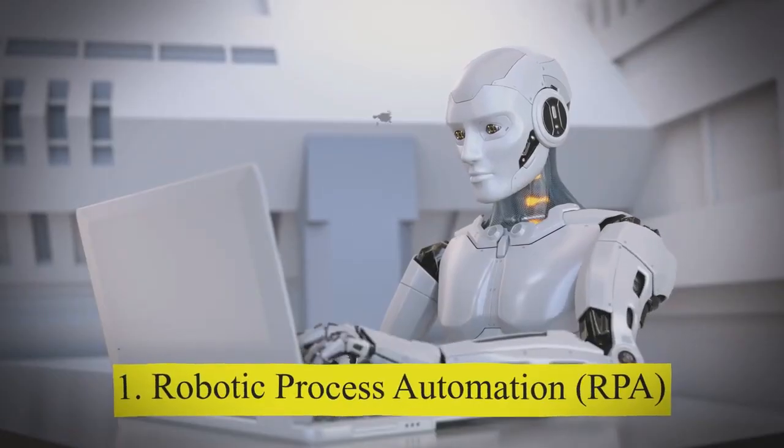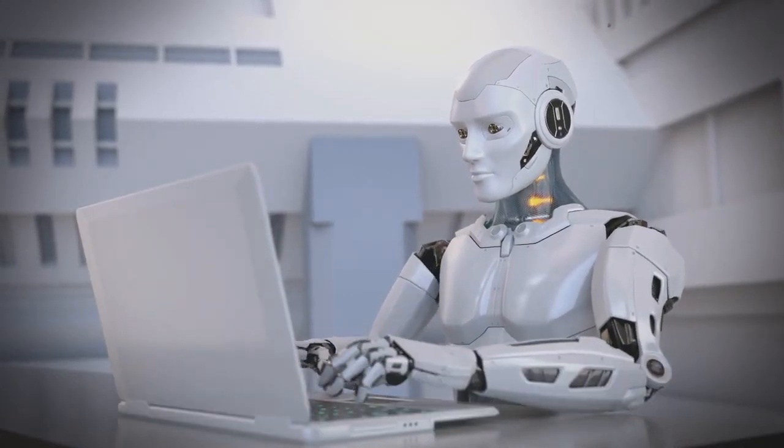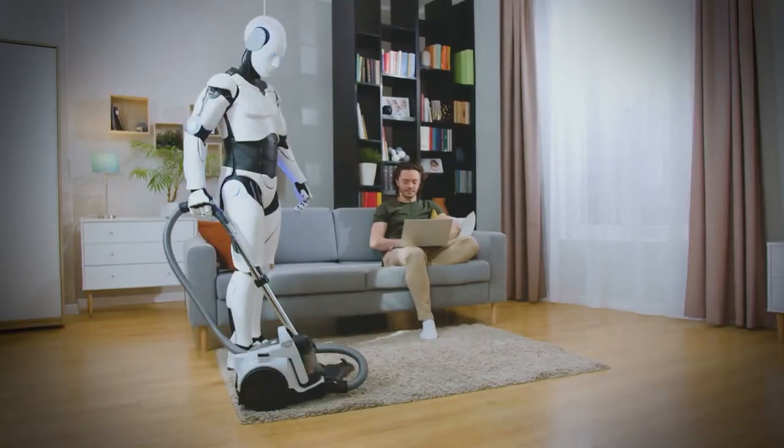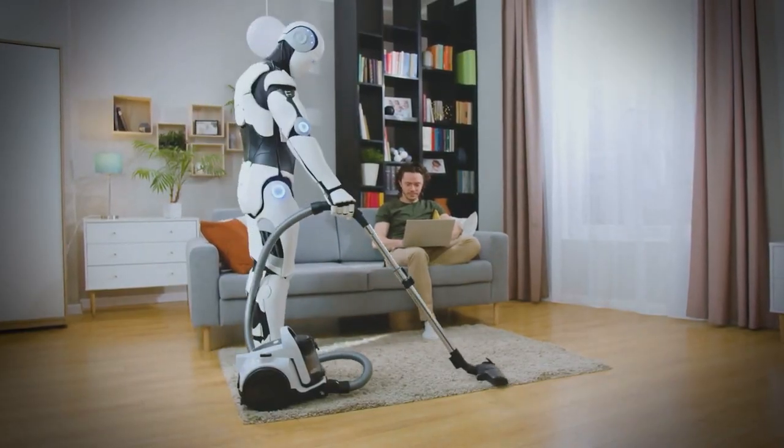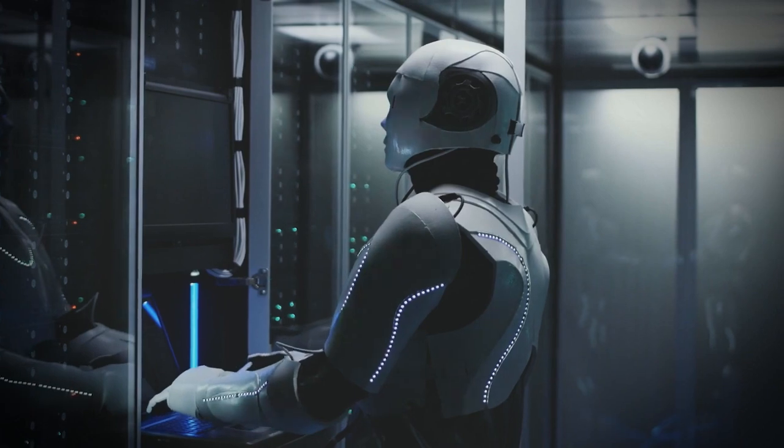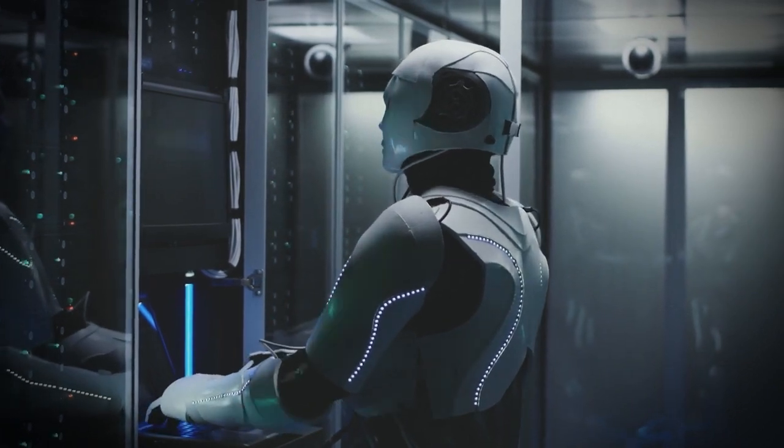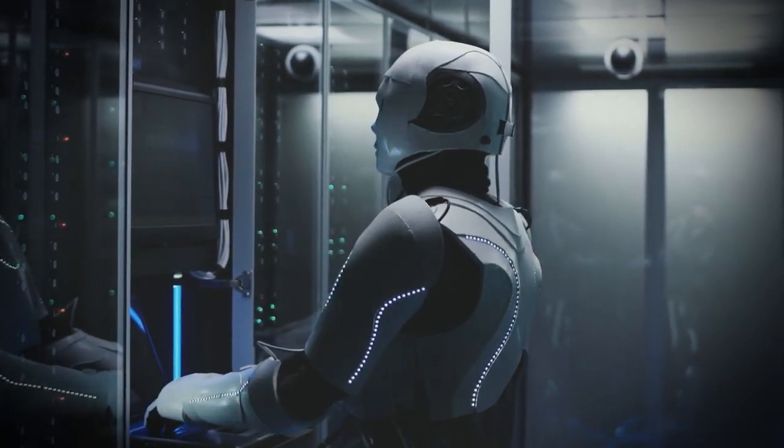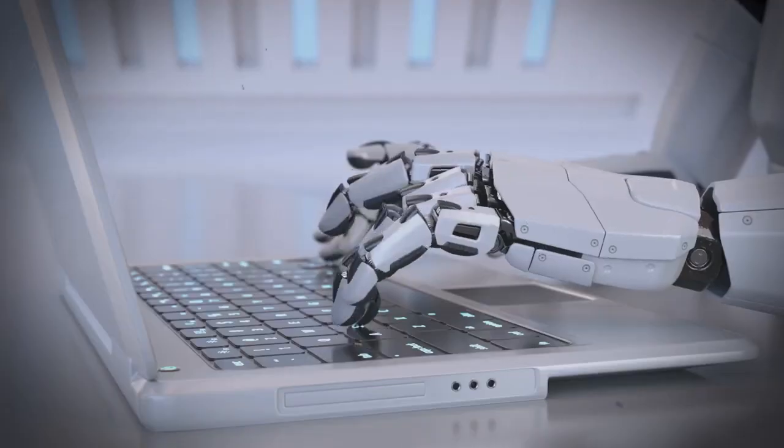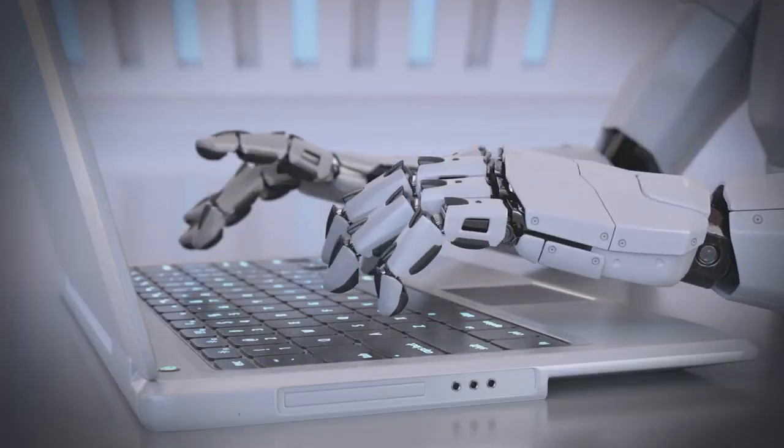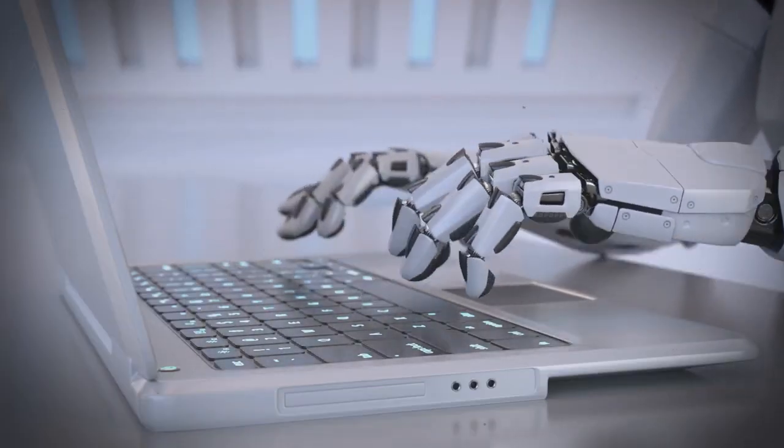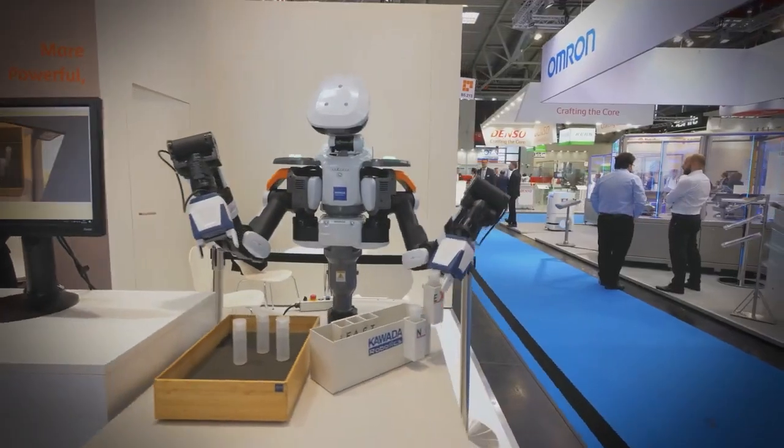Number 1: Robotic Process Automation. It's another groundbreaking technology that's revolutionizing the way we work by automating various tasks. RPA involves using software to handle business processes like application interpretation, transaction processing, data management, and even email responses. It takes over repetitive tasks that were previously done by humans.